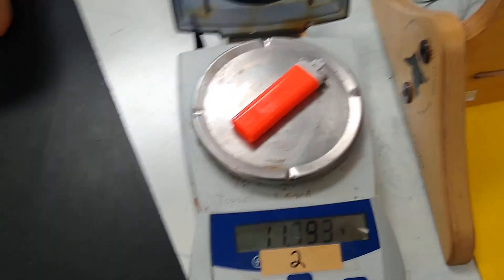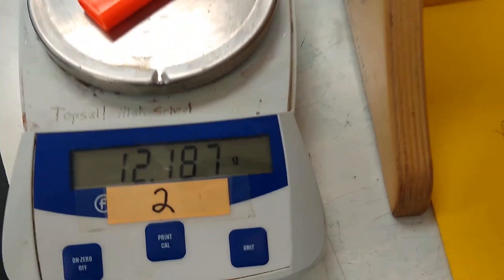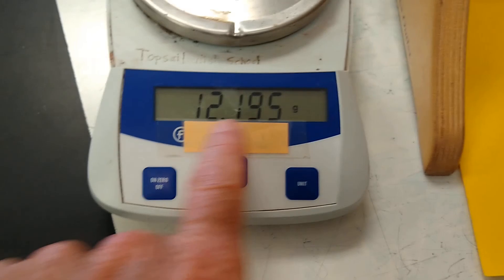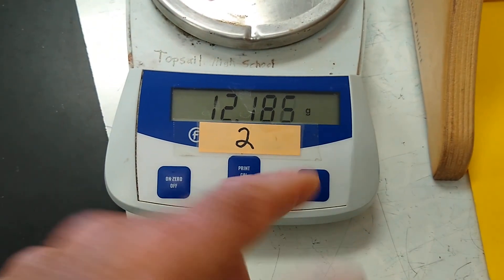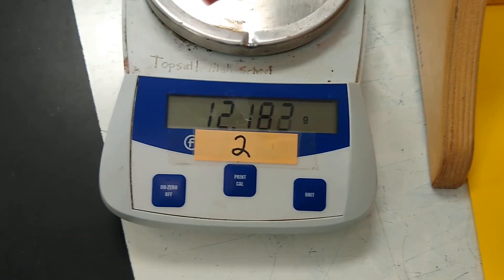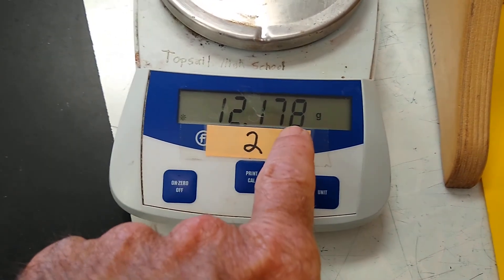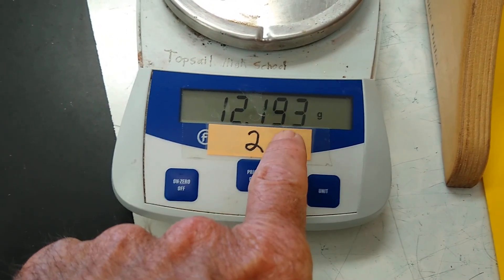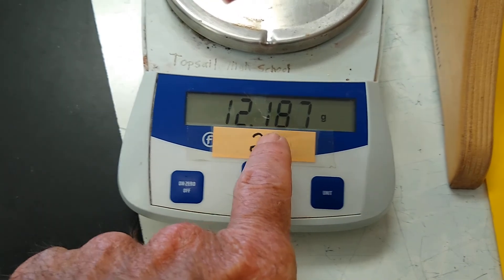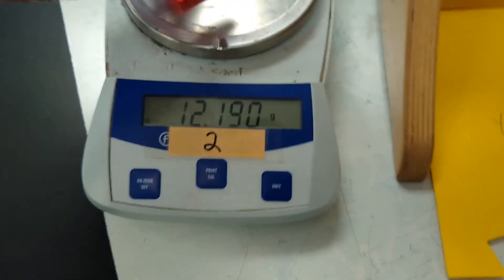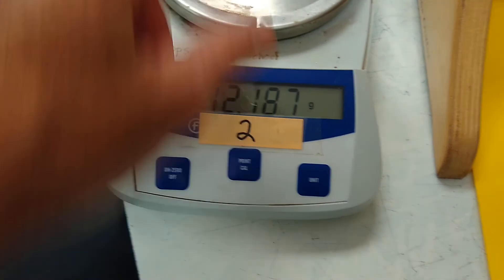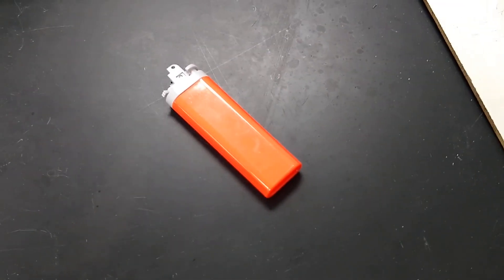First we're going to weigh the lighter. This scale goes down to the thousandth of a gram, so just the air moving in the room is going to make it change. I'm going to go with this reading - I'm going to say this is 1.29, oh excuse me, 12.19. So 12.19 grams, that is the weight of our lighter.